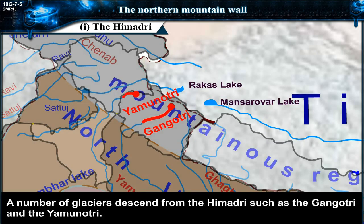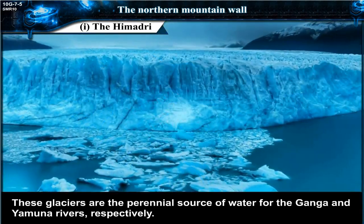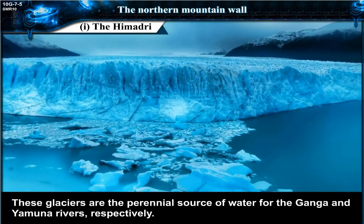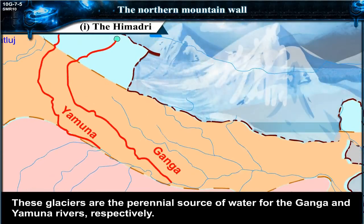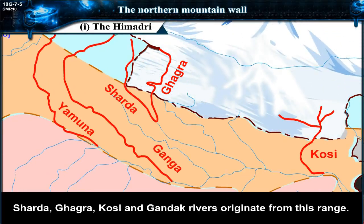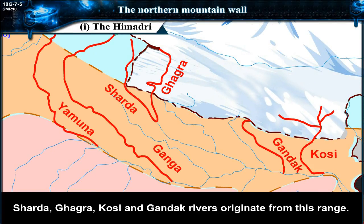The Gangotri and the Yamnotri glaciers lie in Uttarakhand. These glaciers are the perennial source of water for the Ganga and Yamuna rivers respectively. The Sharda, Ghagra, Kosi, and Gandak rivers also originate from this range.